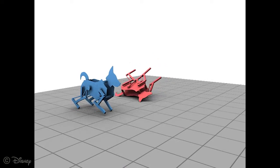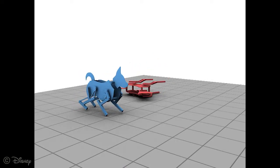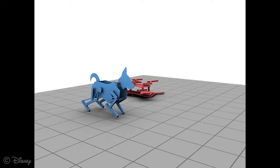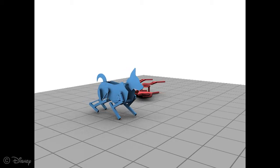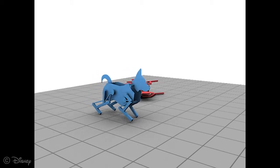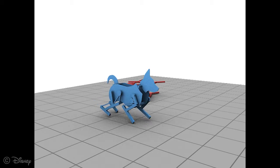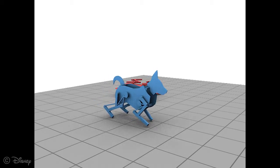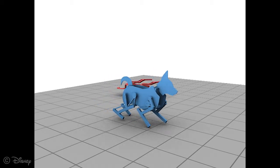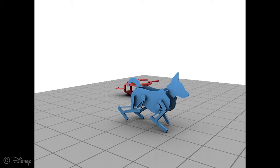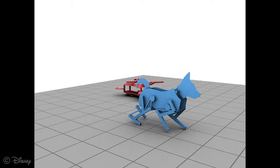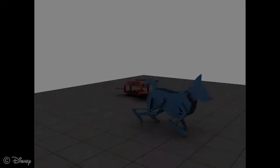Our optimized result walks stably, whereas the initial configuration falls over immediately. We place symmetric parameter constraints on the pairs of front and back legs to reduce the design complexity. Compared to the initial design, our optimized version has a lowered center of mass, which increases the stability and leads to a successful walking motion.